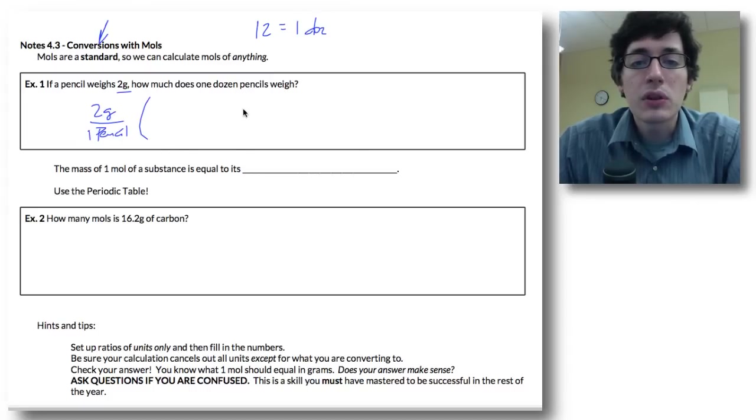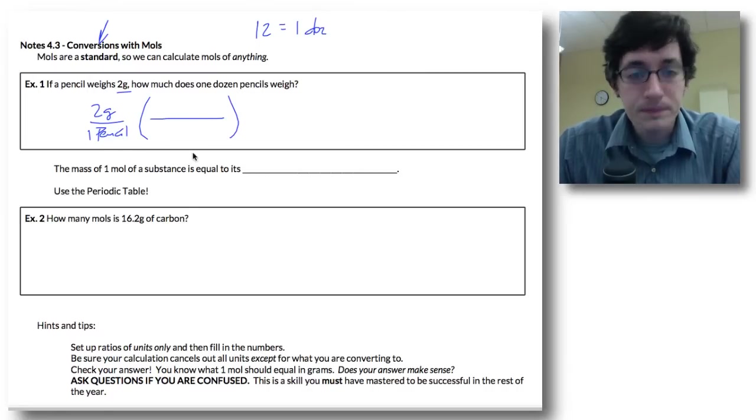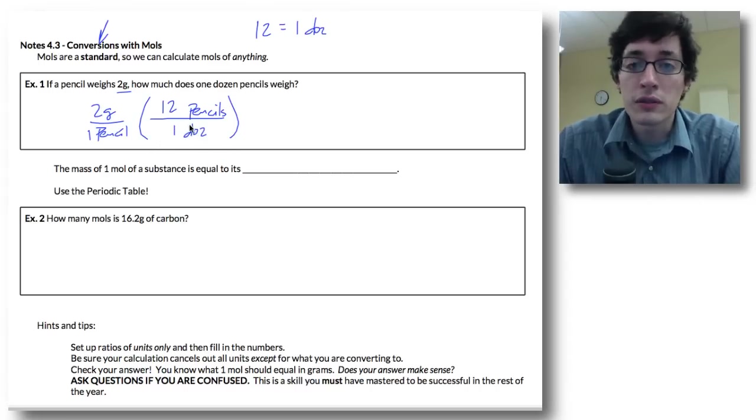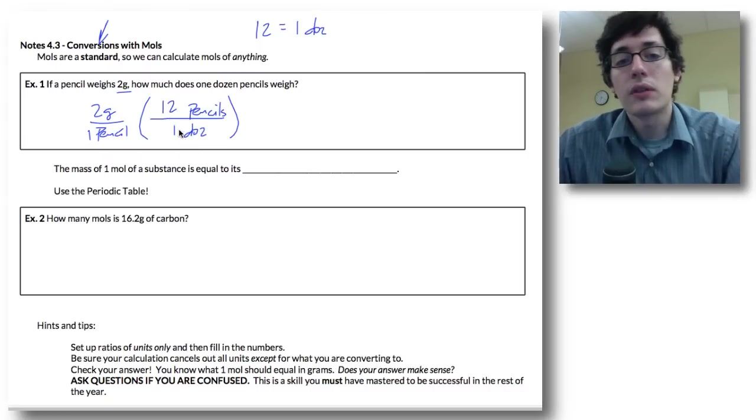And if I set up a conversion factor, remember this from chapter 1 when we converted metric units, I want to cancel out pencils. And what we want is if we have 12 pencils, we are exactly equal to one dozen. This unit right here is called a conversion factor where you're dropping one unit and picking up another one.